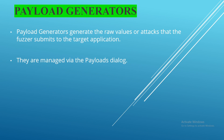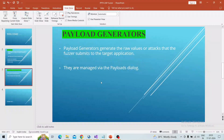Coming to the payload generator — the payload generator generates a raw value or attack that the fuzzer submits to the target application. We can get payloads from ZAP, as they have built-in payloads available that we can use for the attack. Now let's go to the ZAP section for the demo.